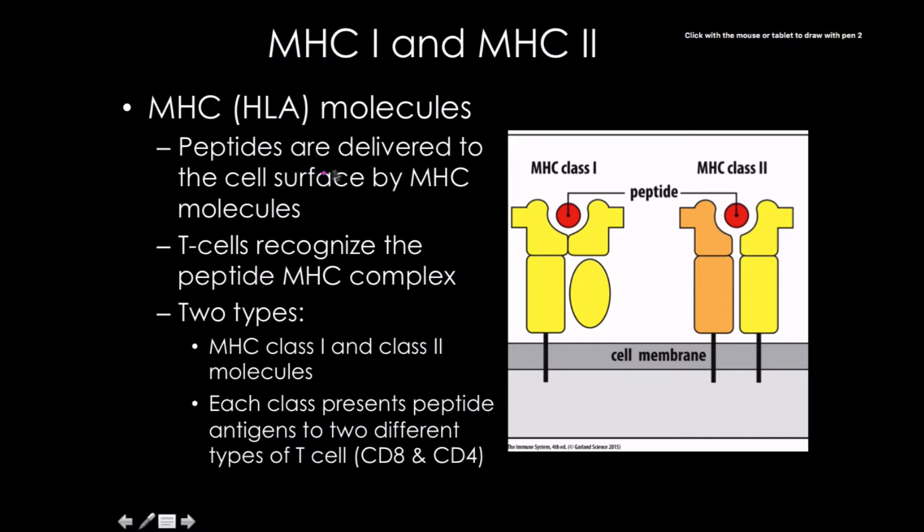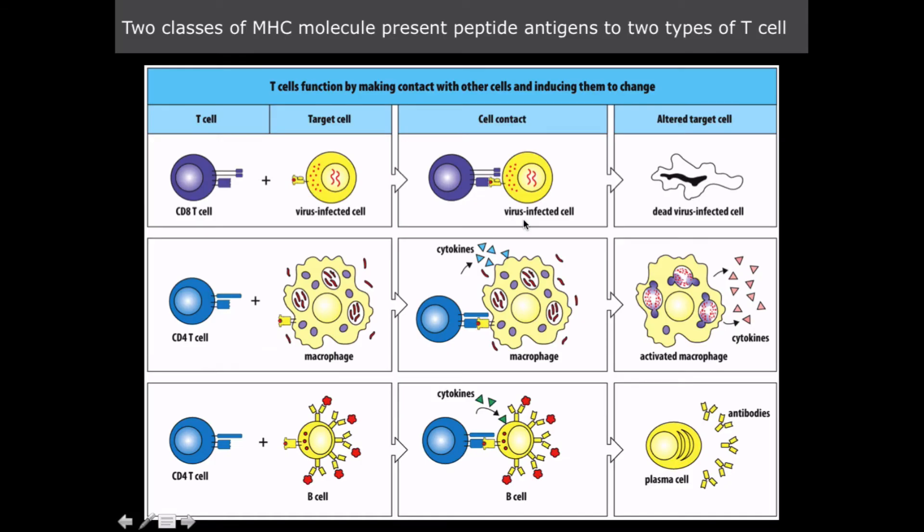But these peptides are delivered to the cell surface by MHC molecules. T cells are going to recognize and interact with the individual. Notice that it's just a peptide in the MHC complex. It's not like what we had seen with T cell receptors or B cell receptors. And there's two types. There's class 1 and class 2. But look at the structures between them. This is just an overview of their functions so you don't lose track of what's going on here.